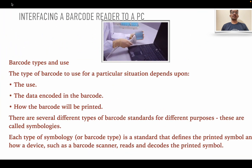Interfacing of a barcode reader to a PC: this diagram shows how the interface is connected. Barcode types and uses: the type of barcode to use in a particular situation depends on the use, the data encoded in the barcode, and how the barcode will be printed. There are several different types of barcode standards for different purposes, called symbologies. Each type of symbology is a standard that defines the printed symbol and how a device such as a barcode scanner or reader decodes that printed symbol.